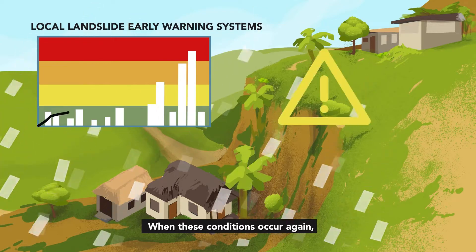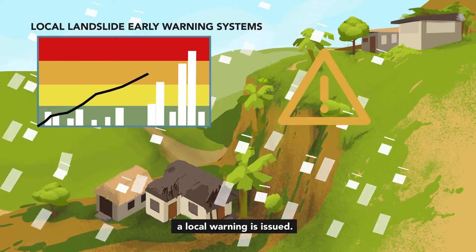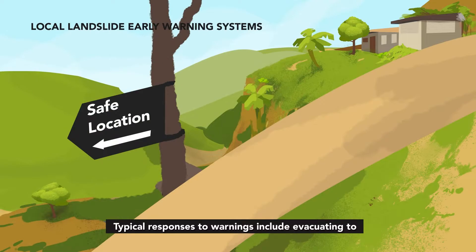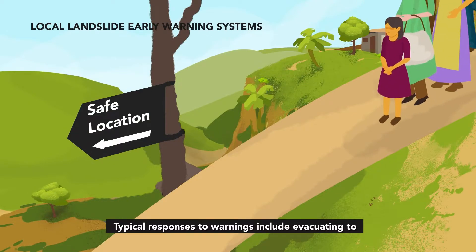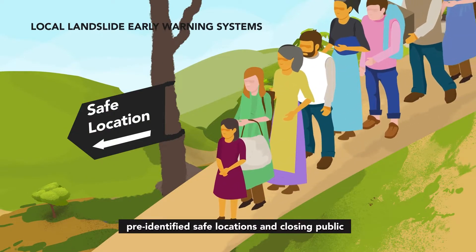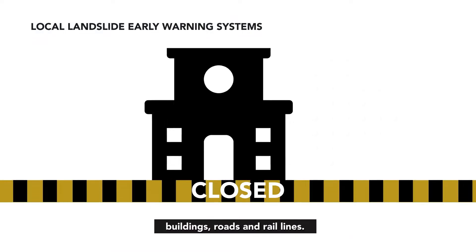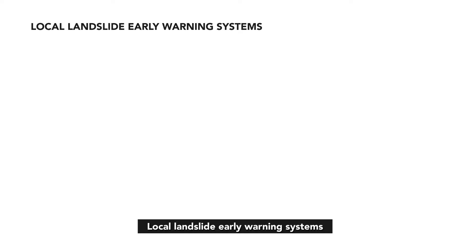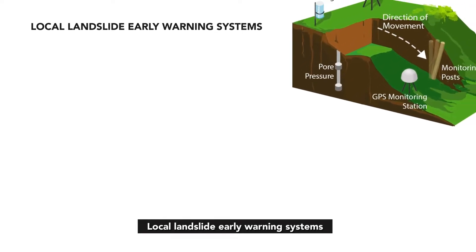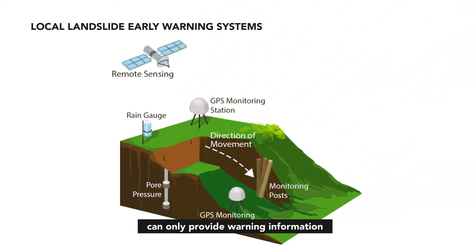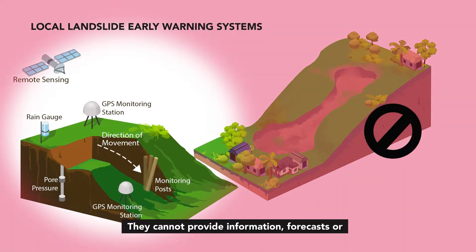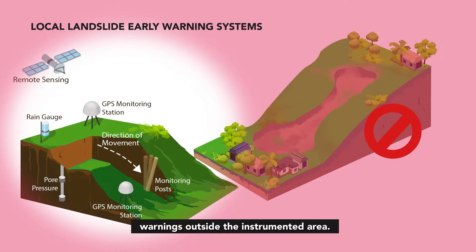When these conditions occur again, a local warning is issued. Typical responses to warnings include evacuating to pre-identified safe locations and closing public buildings, roads and rail lines. Local landslide early warning systems can only provide warning information for the specific instrumented locations. They cannot provide information, forecasts or warnings outside the instrumented area.